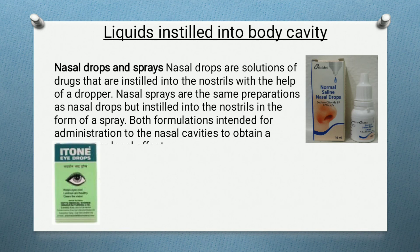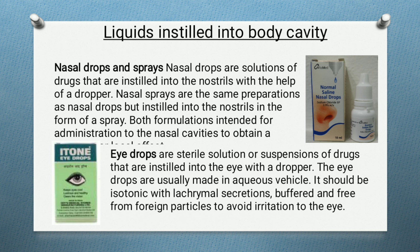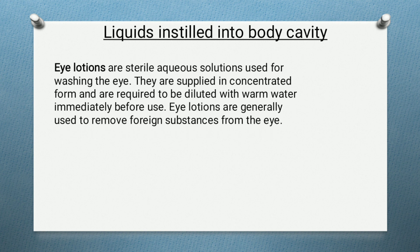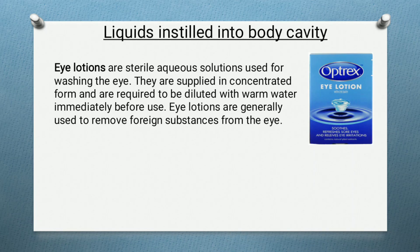Eyedrops are sterile preparations or suspensions of drugs instilled into the eye with a dropper. They are usually made in an aqueous vehicle and should be isotonic with lacrimal secretion, buffered, and free from foreign particles to avoid irritation. Eye lotions are sterile aqueous solutions used for washing the eye, supplied in concentrated form and diluted with warm water before use to remove foreign substances. Note that eye lotions and lotions are completely different preparations.